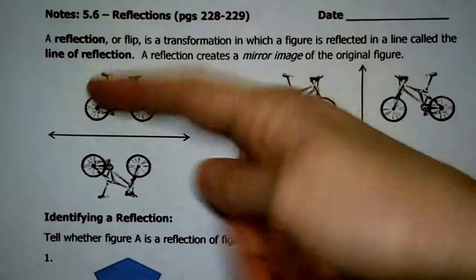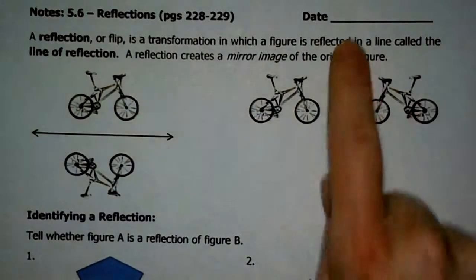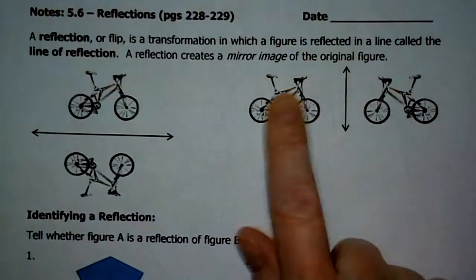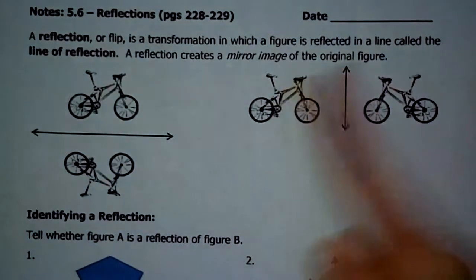You don't just have to flip it over a horizontal axis. You could also flip it over a vertical axis. So that's kind of like the Y. So this bike is looking in the mirror. Wow, what a nice looking bike. It's just flipped right over.